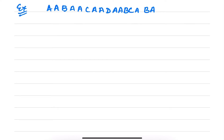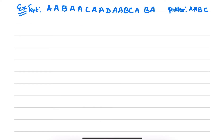In the previous videos, you have seen the NAV's designing, concept and analysis part and we have solved few examples there. Here we will solve one more example. Our text given is AABAACAADAABCABA and my pattern is AABC. Now let's start with the solution.